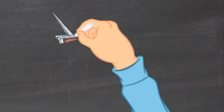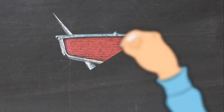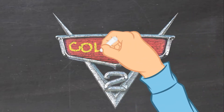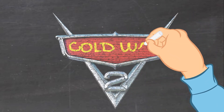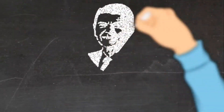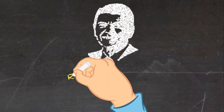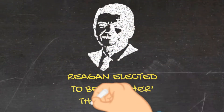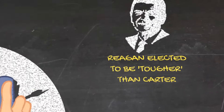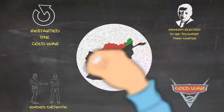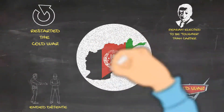As a result, the world entered what some historians characterize as a Second Cold War, perhaps the chief architect of which was US President Ronald Reagan, newly elected to be tougher on communism than his predecessor, Jimmy Carter.